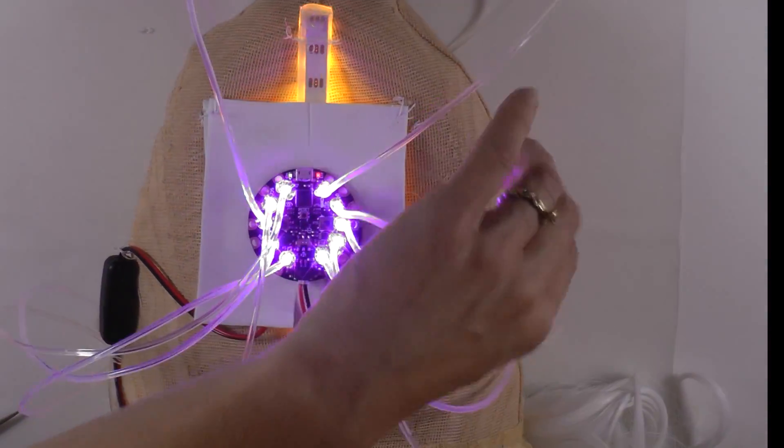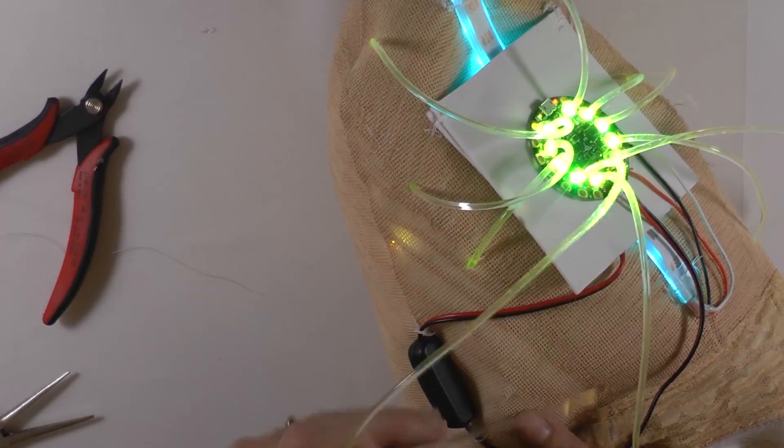Clip some tiny holes in the wig cap and slide the light pipe through to the outside.